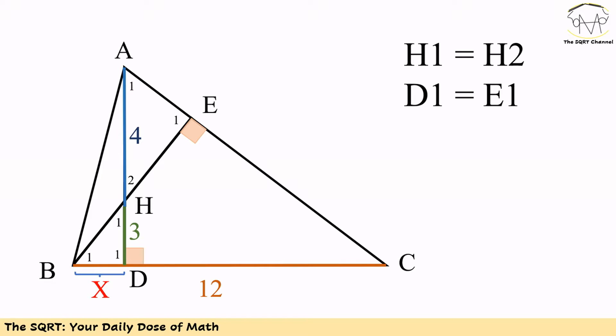In particular, we are going to show H1 equals H2, and then D1 equals E1, both of them are right angles. Based on these two, we know B1 equals A1.